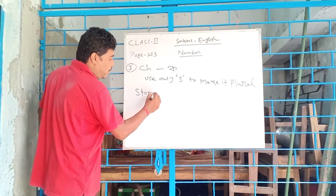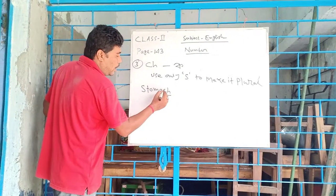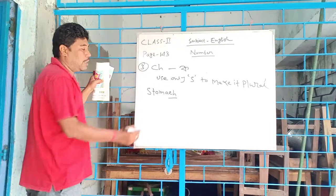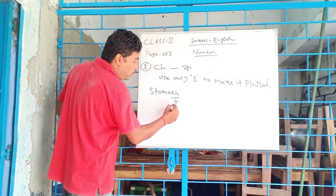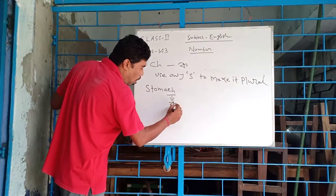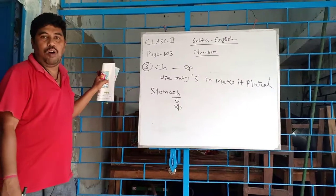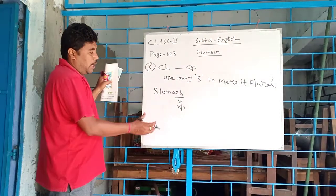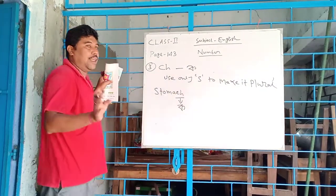I can give you an example for this rule such as stomach, S-T-O-M-A-C-H. Here last two alphabets are CH. But in Bengali, its pronunciation is K, stomach. So, here we use only S, not ES.